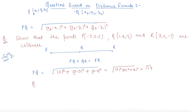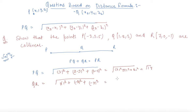Now we find the distance QR. That will be: 7 minus 1 is 6, squared; plus 0 minus 2 is minus 2, squared; plus minus 1 minus 3 is minus 4, squared. So it is 36 plus 4 plus 16, giving root 56, which is 2 root 14.